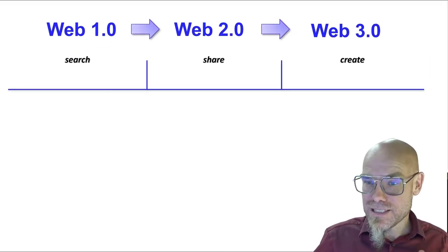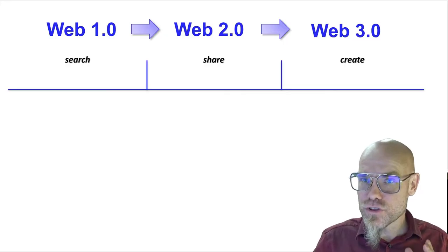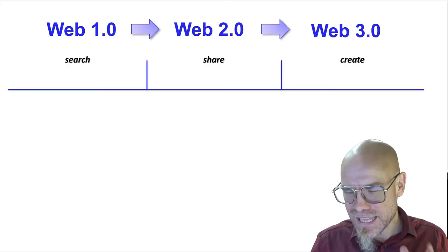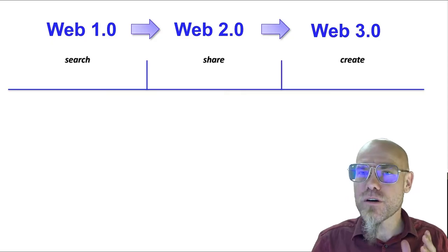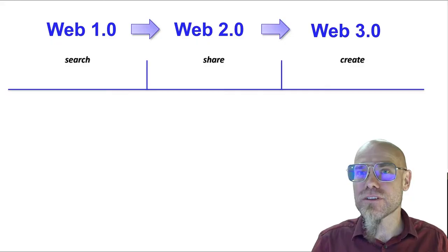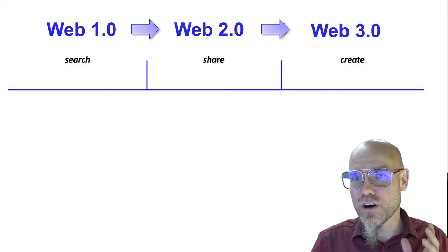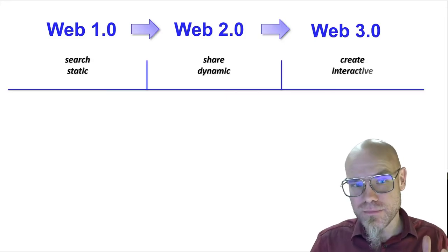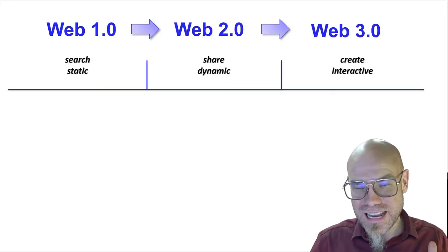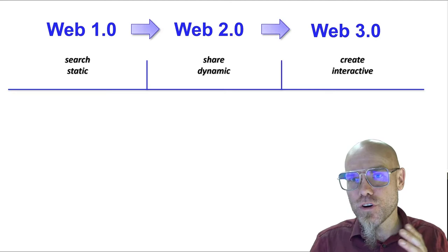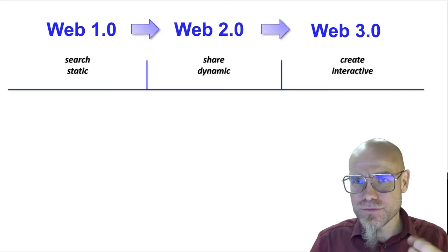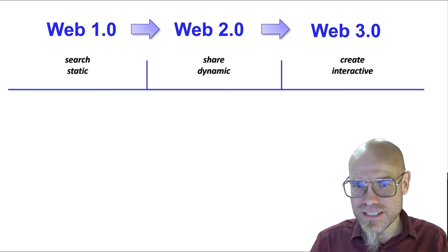Web 1.0 was more about passive searching. 2.0 is more about sharing — it's more social in that aspect. And 3.0 is more about generating, so generative AI will be important there. You could also think about it as: web 1.0 was static, 2.0 more dynamic, and 3.0 interactive — there's more interactivity.